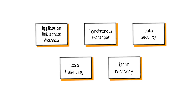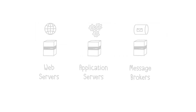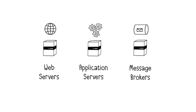Middleware creates a standardized way for apps to interact, so developers can focus on building features instead of reinventing the wheel. Here are some examples: Web servers, for example Nginx, handle requests from your browser and serve up web pages. Application servers, for example Tomcat or JBoss, manage the backend logic of applications. Message brokers, for example Apache Kafka or RabbitMQ, facilitate communication between different parts of an application by managing message queues.